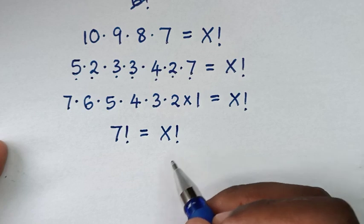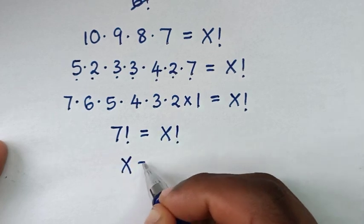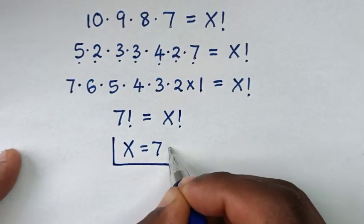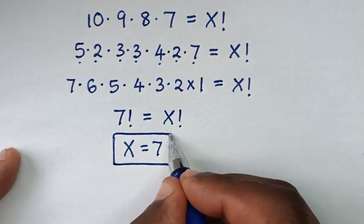Now we have factorial on both sides, so x equals 7. Therefore, this is the final answer for the value of x in this problem.